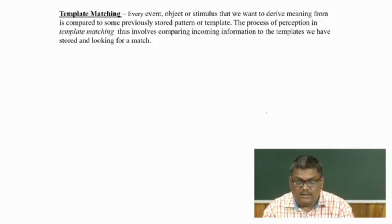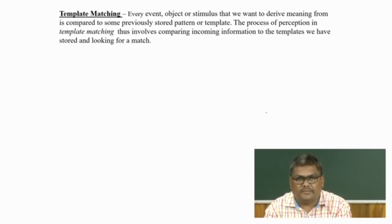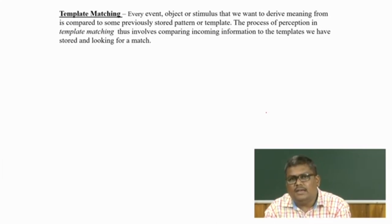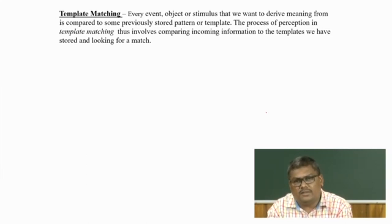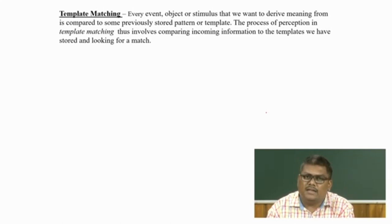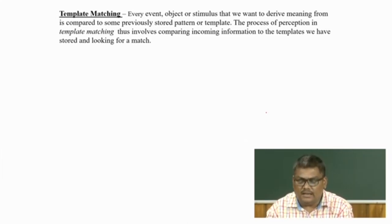There are three or four bottom-up processes we will discuss in this lecture. The first is called the template matching process. It is a very simple process — it says there are pre-configured templates in the brain. The bottom-up process takes in information from the visual world, integrates it, and compares it against these templates. When a match is recognized, a correct interpretation is made; when there is no match, another template is tried.